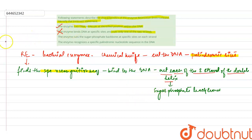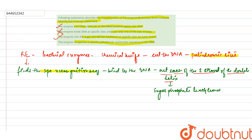The third statement says: the enzyme cuts the sugar-phosphate backbone at the specific site of each strand. Yes, it cuts the sugar-phosphate backbone at the specific site of each strand, so this statement is correct.